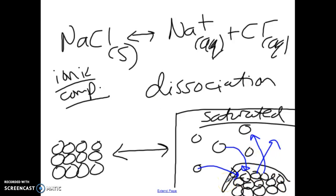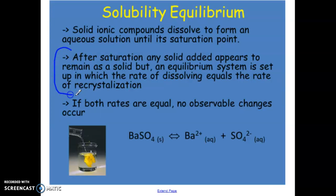On first glance, it looks like we just have crystals at the bottom of this glass. But what's happening is the rate of those crystals dissolving is equivalent or has the same rate as the ions recrystallizing out. Even though you have a container that has some salt or sugar sitting at the bottom, it's always changing. Some of that sugar is dissolving into water and some of the dissolved sugar is becoming crystallized again. So solubility equilibrium is really the rate of crystallization equal to the rate of dissolving. After you've reached the saturation point, any solid added will appear to remain as a solid, but an equilibrium system is set up. The rate of dissolving equals the rate of recrystallization.